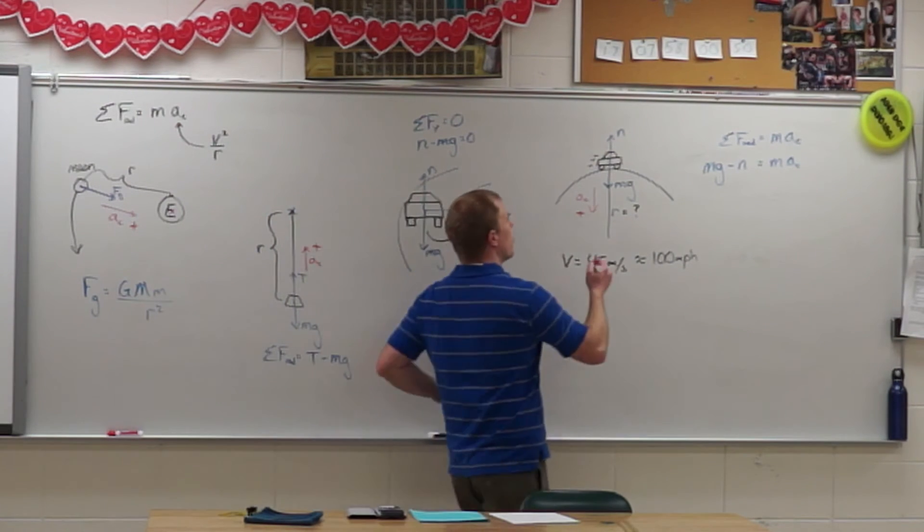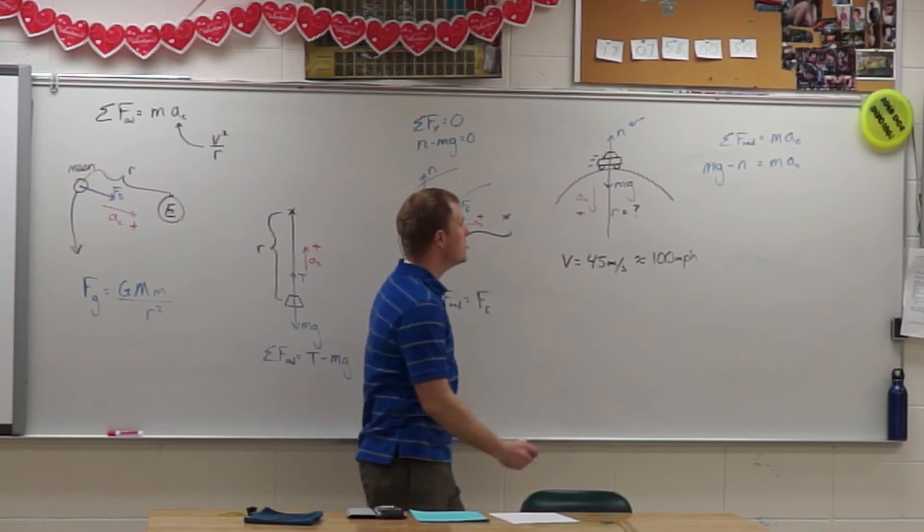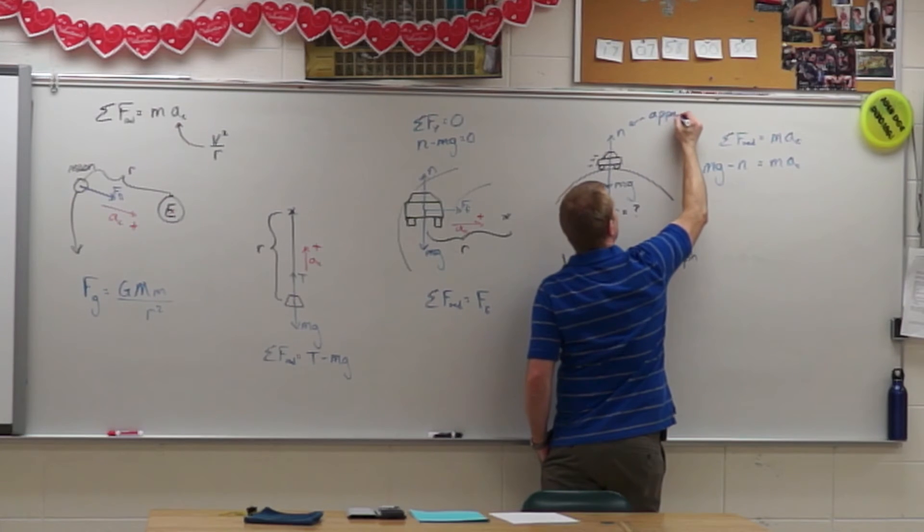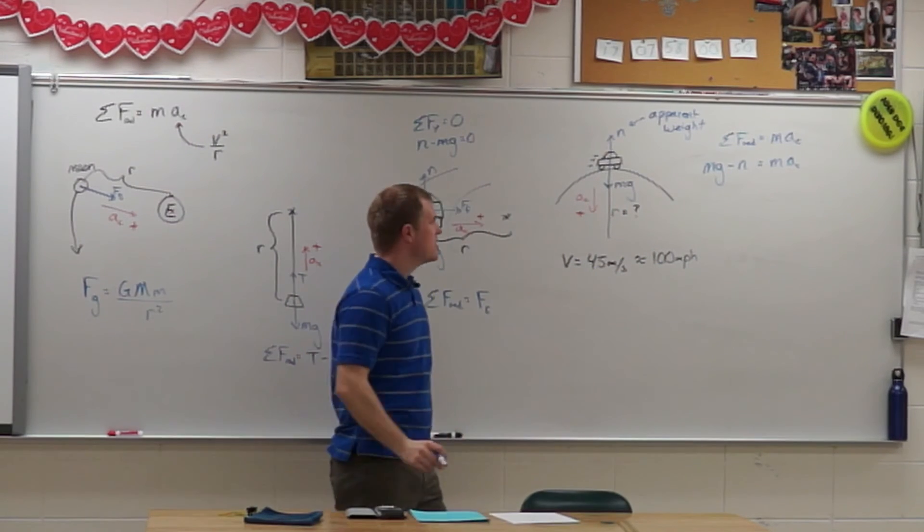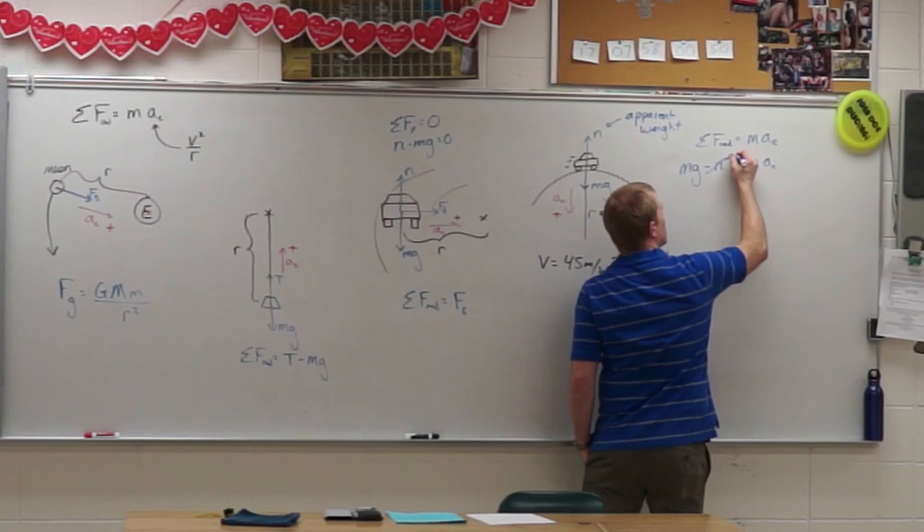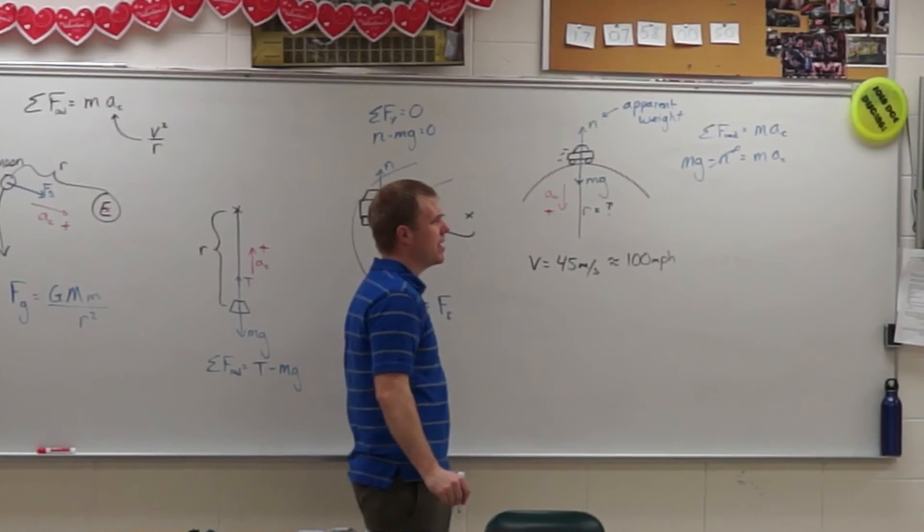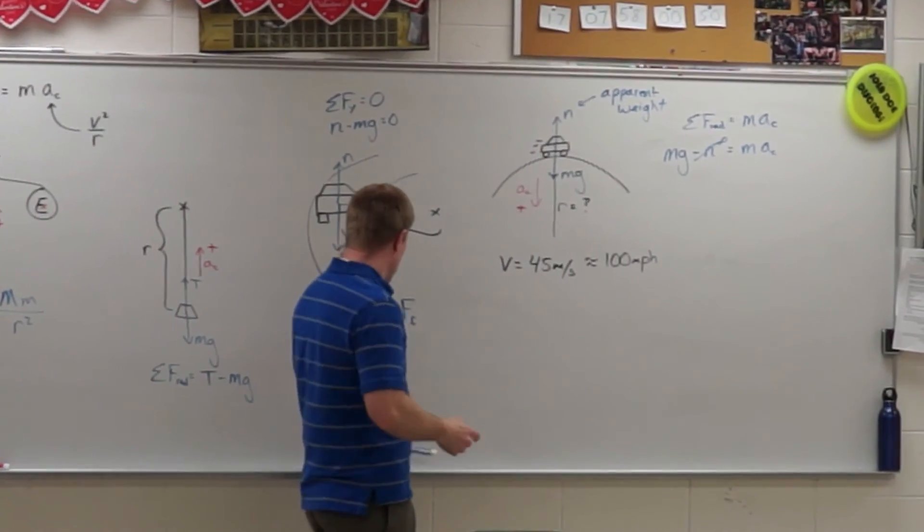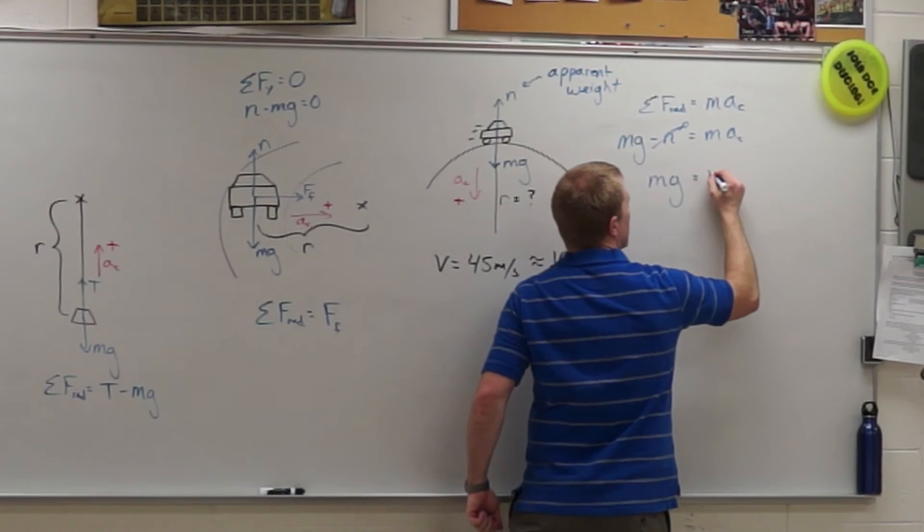And remember this normal force, whether you're on a roller coaster or in a car, this is what our apparent weight is. So what I want to look for is what's the speed when my apparent weight goes to zero, when my normal force goes to zero, such that this 45 meters per second is the maximum speed over that hill before catching air. So what I end up seeing then is I get Mg equals mAc.